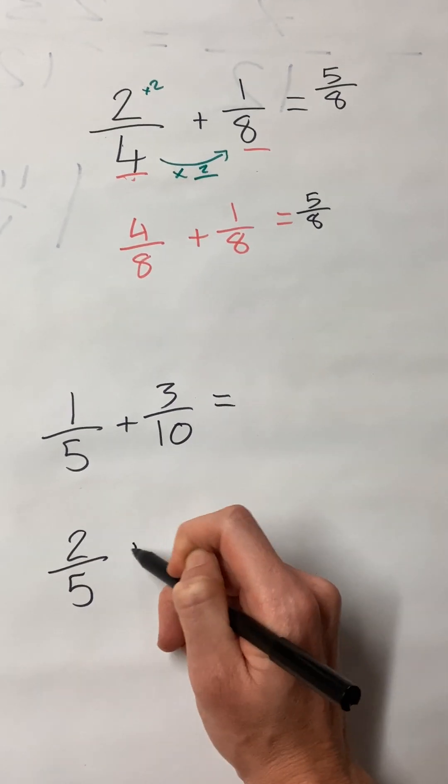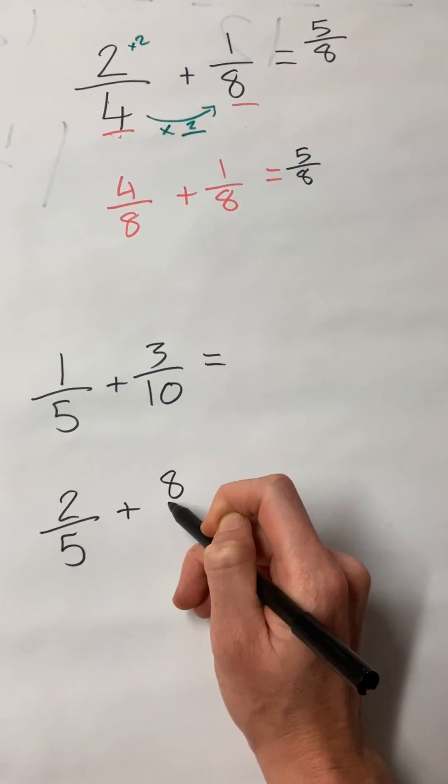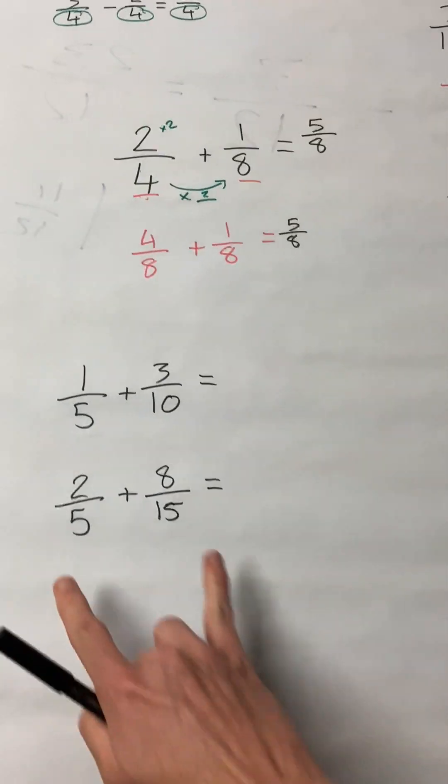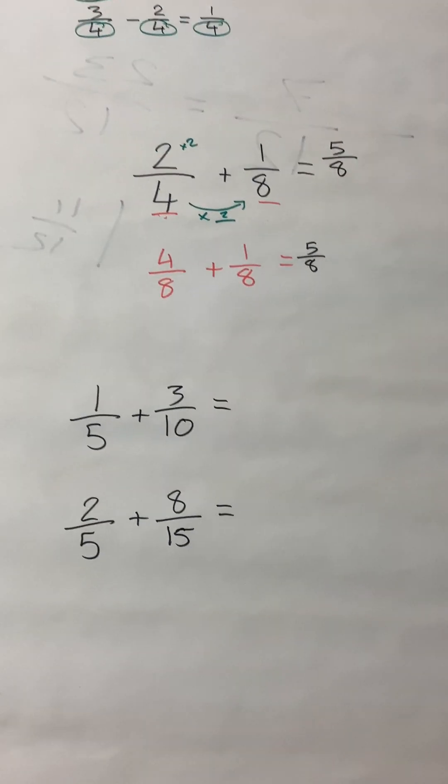Three-fifths plus eight-fifteenths equals. They are not the same, can you make them the same?